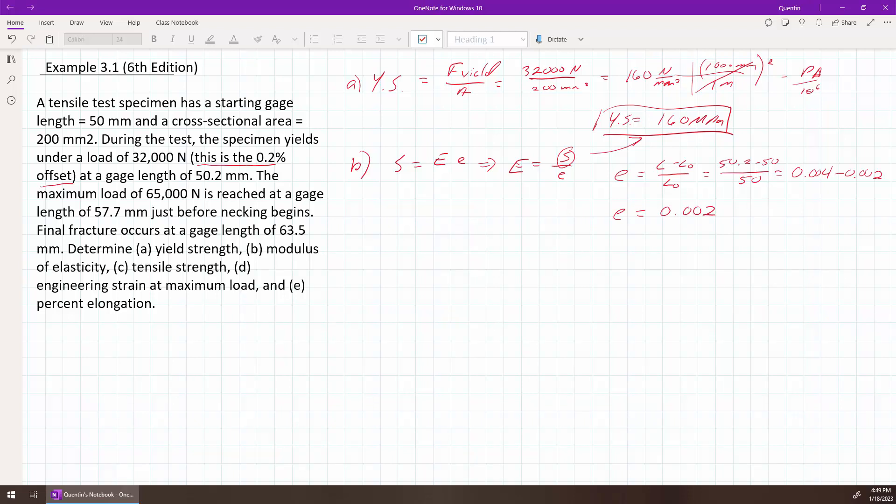And then we're going to put that in here. So E is going to be 160 megapascals over 0.002, which works out to be a nice even 80 times 10 to the third megapascals. So our modulus of elasticity is 80 times 10 to the third.